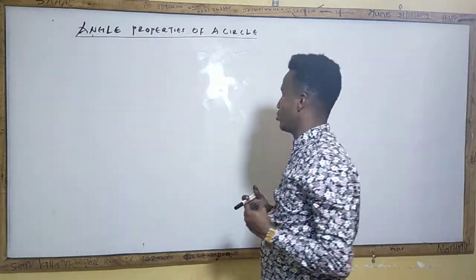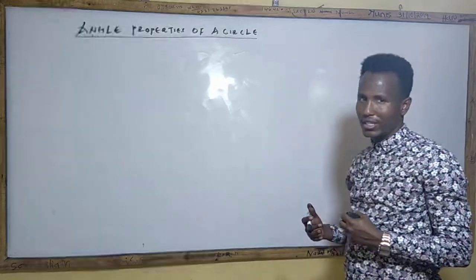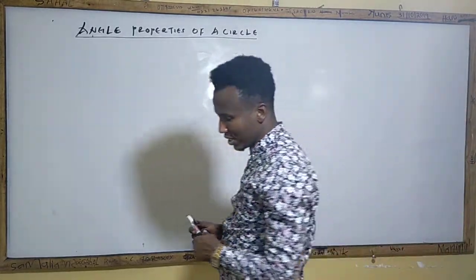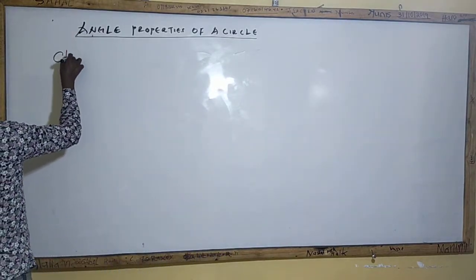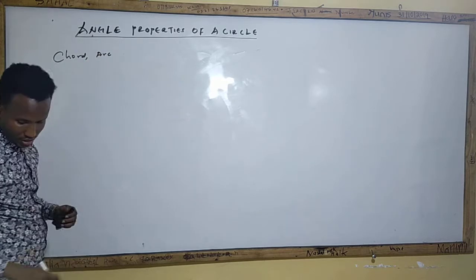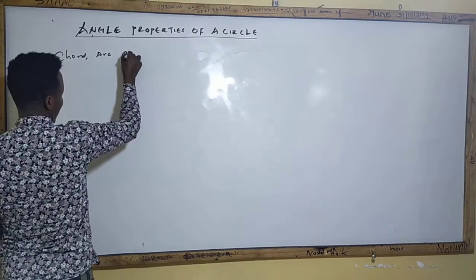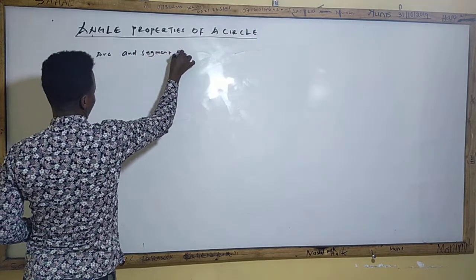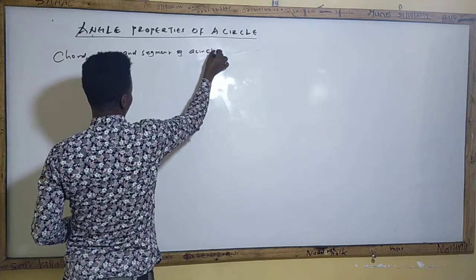Before we talk about questions, we are expected to know some terms used in Angles and My Circle. The first things we are going to discuss about are: Chord, Arc, and Segment.